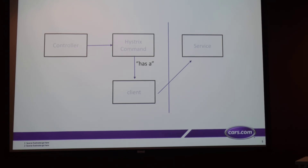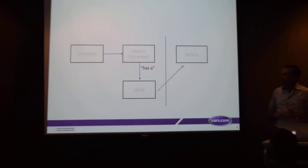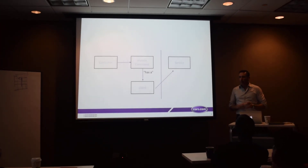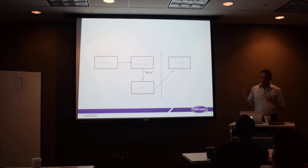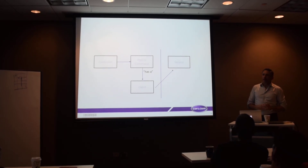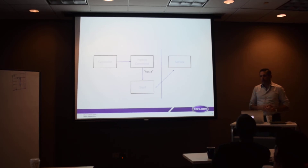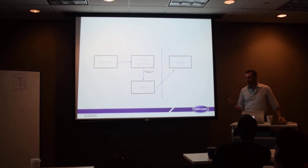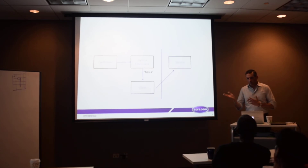They have a synchronous and asynchronous version. We're going to use the synchronous one today — it's a blocking call, a little more straightforward to see and deal with. They also have an asynchronous version which is literally an observable, an observer pattern, and you get a Java Future back — kind of like front-end promises.